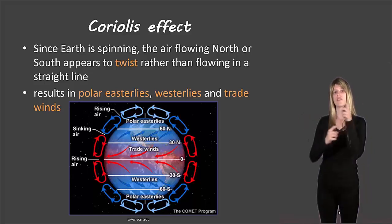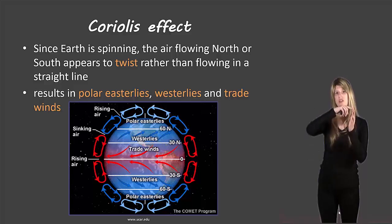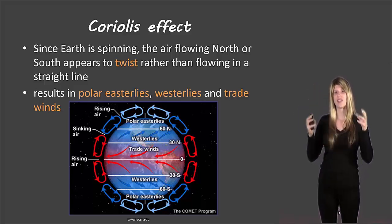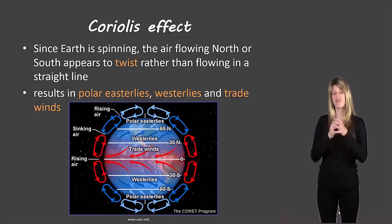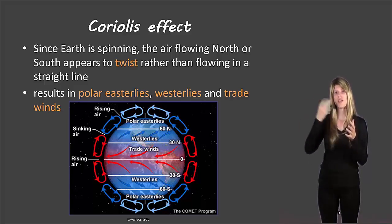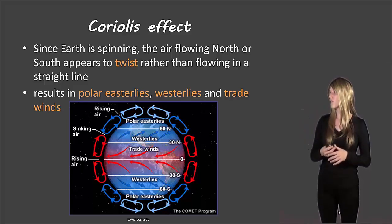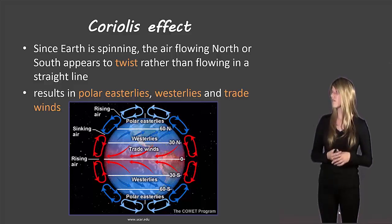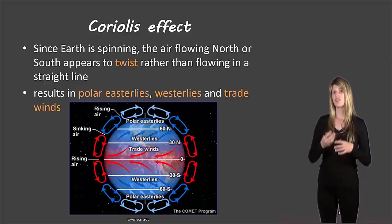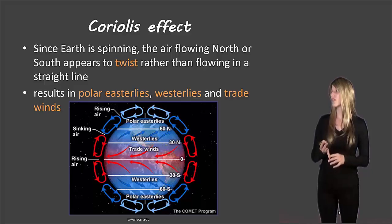So because the Earth is spinning, when we get these wind patterns, they're going to sort of form almost like little coils. So instead of having just our convection current effects, we also get these winds because of the fact that the Earth is spinning. So air flowing from north or south appears to twist rather than flowing in a straight line. And so you end up with these winds called the polar easterlies, the westerlies, and the trade winds.